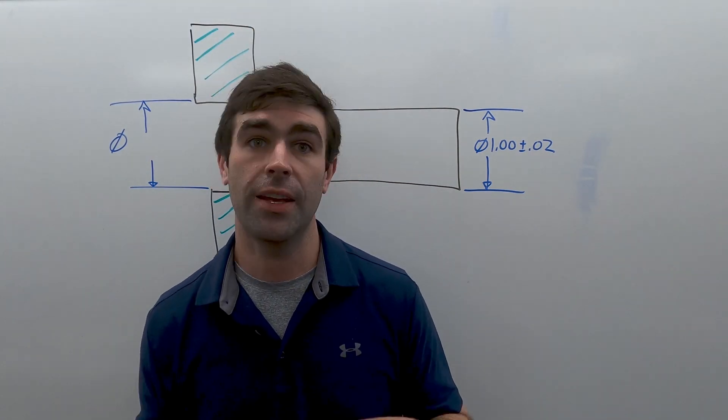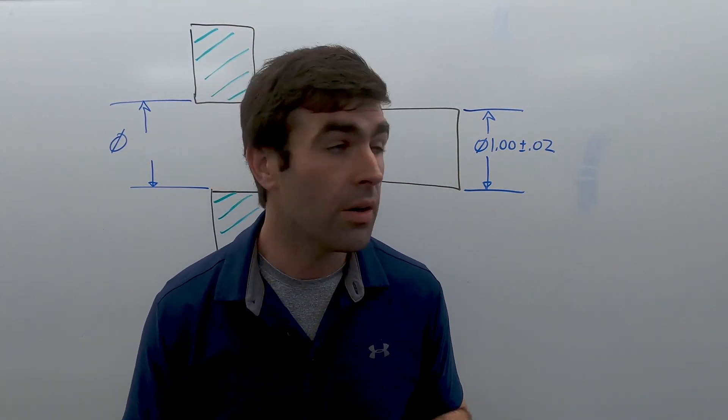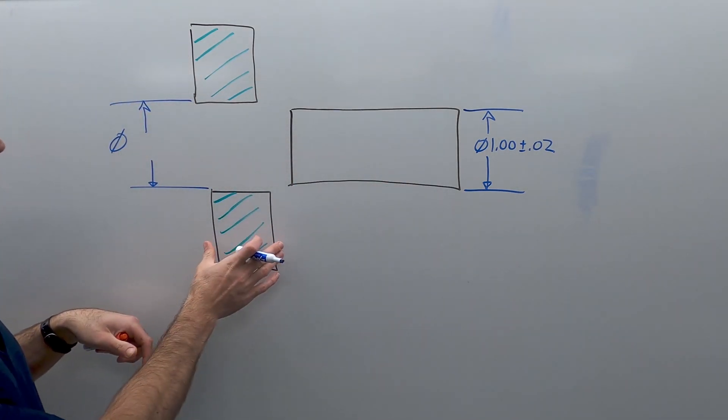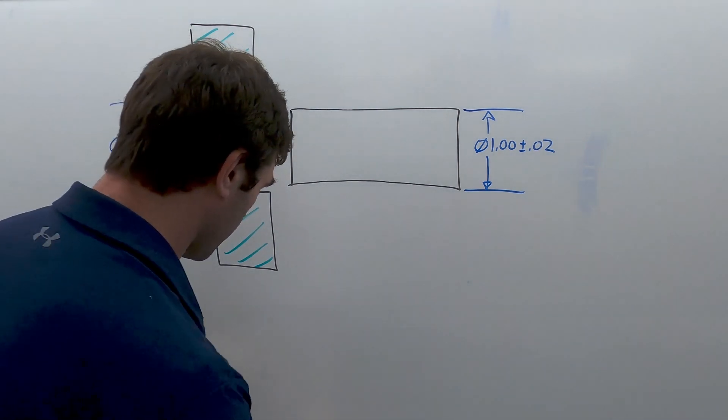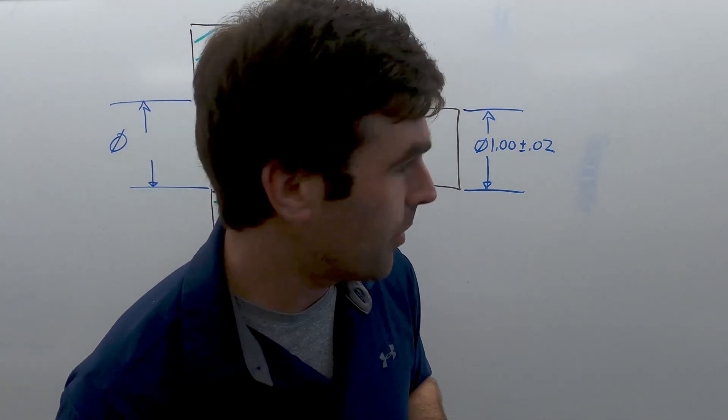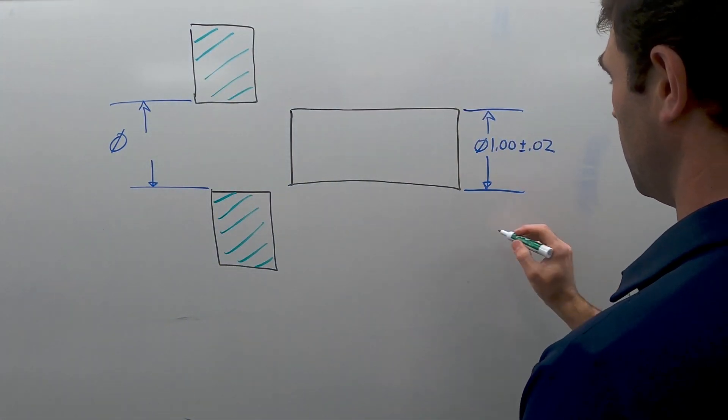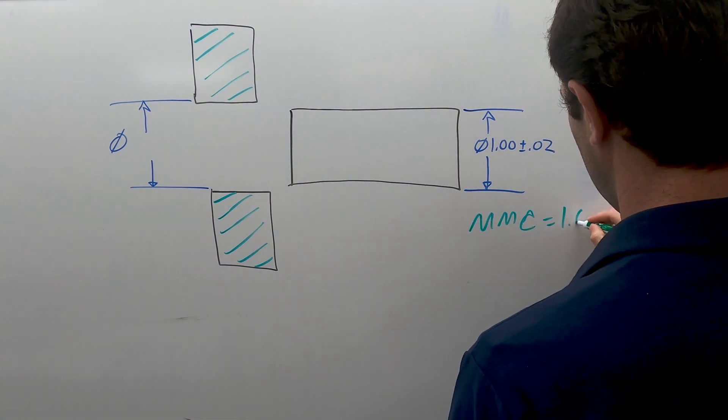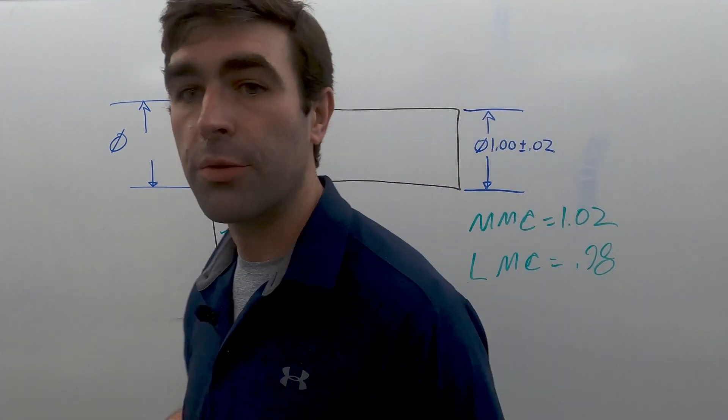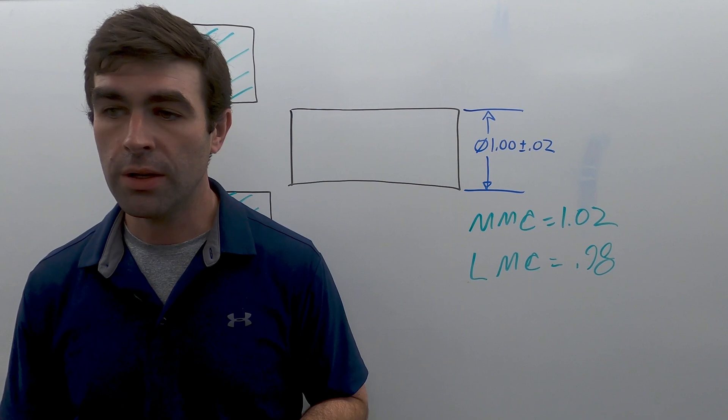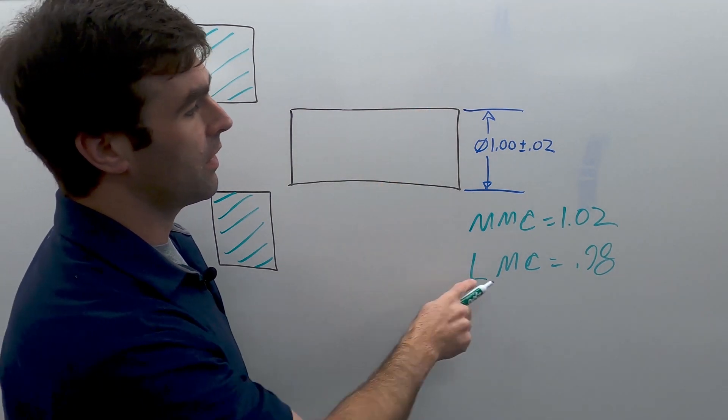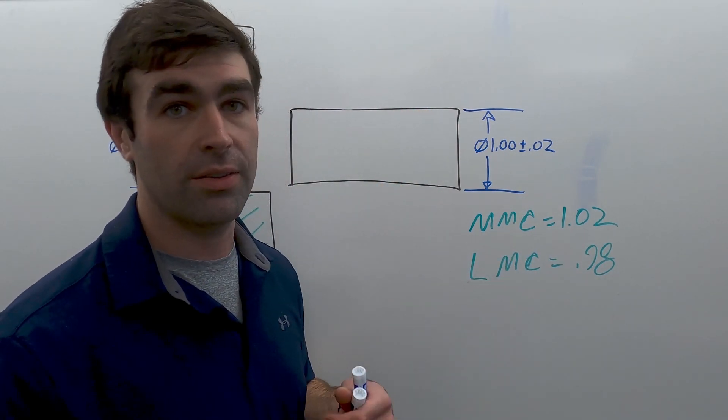So let's talk about how we put this into action. Right here, I have a pin that needs to fit into this hole. You notice I have the hole in section. So a pin, the maximum material condition is the largest diameter. So we could say that the MMC 1.02, the LMC is 0.98. And that's all there is to it. There's no magic. If you put calipers on this pin and you get 1.03, that part is not correct.